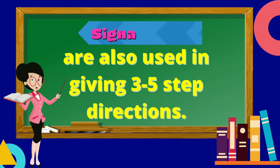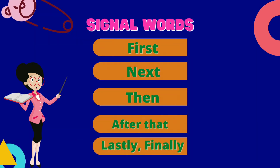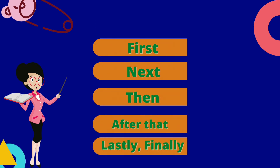Signal words are also used in giving three to five step directions. Some of the signal words used are first, next, then, after that, and lastly or finally.